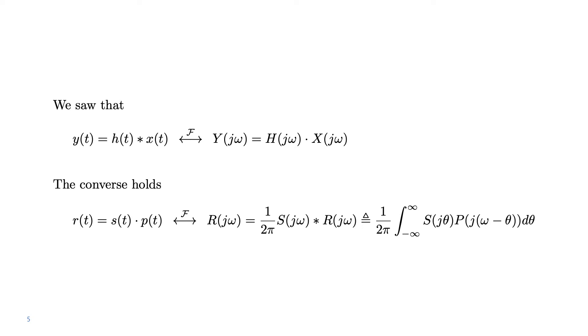The converse holds as a dual property: if a signal r of t is constructed as the product between s of t and p of t, then the Fourier transform R of j omega is obtained as 1 over 2 pi times the convolution between S of j omega and P of j omega. Written as an integral: 1 over 2 pi times the integral of S of j theta times P of j omega minus theta d theta. This multiplication property has important applications in communication systems, for example in modulation, which is a multiplication of signals in time domain.